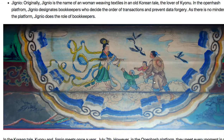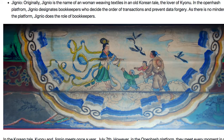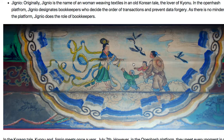This is Geonu and this is Jingya. They meet once a year — every year on July 7th. But in OpenAsh platform, Geonu and Jingya meet every second, every millisecond they meet.